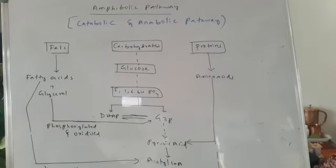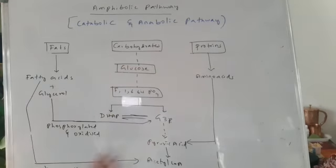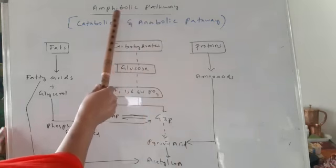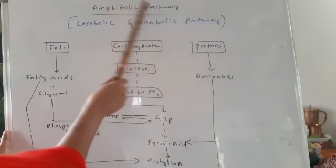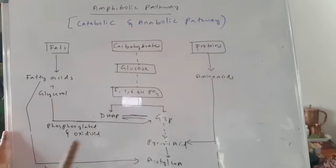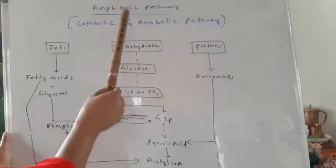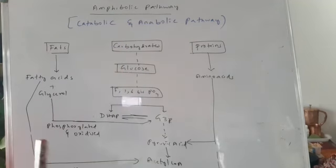So, glycerol plus fatty acids producing fats is an anabolic process, and amino acids combining to form proteins is also an anabolic process. Depending upon the demand in the cell, either a catabolic process or an anabolic process will take place. Since the respiratory pathway is involved in both catabolic and anabolic processes depending upon the demand in the cell, the respiratory pathway is considered an amphibolic pathway.